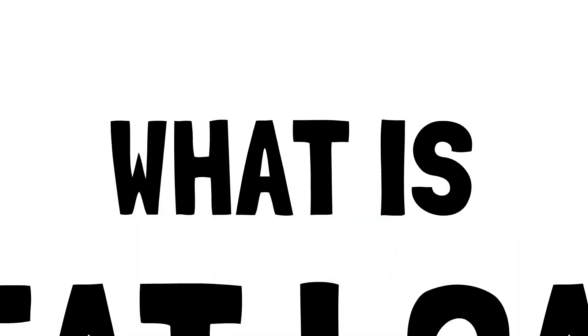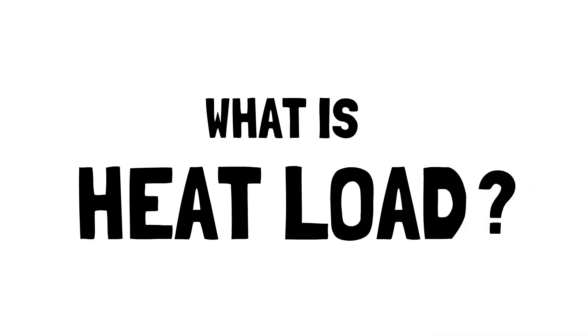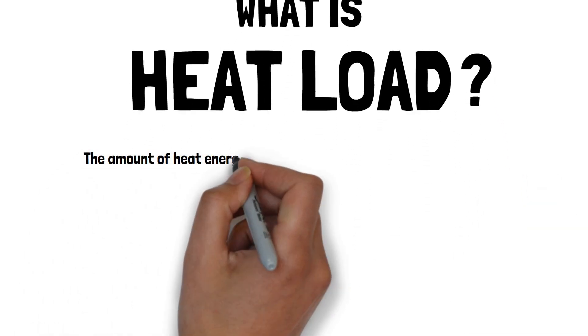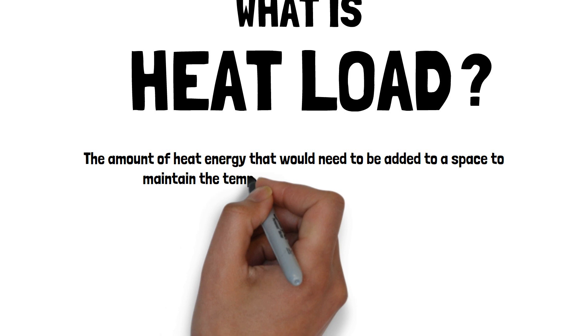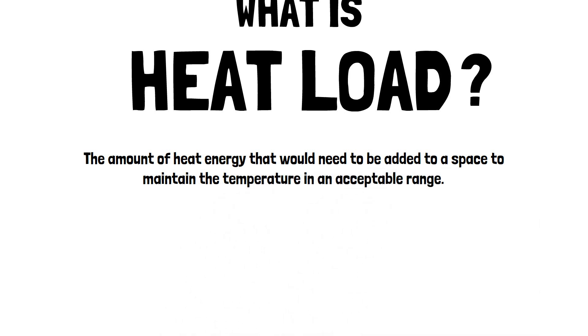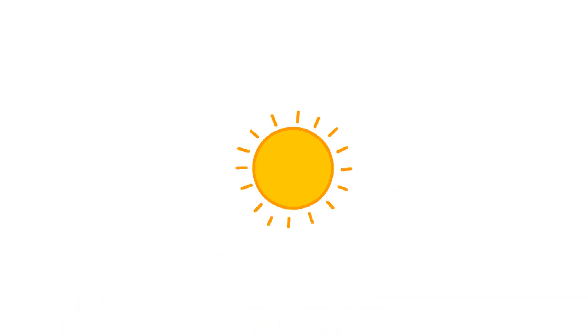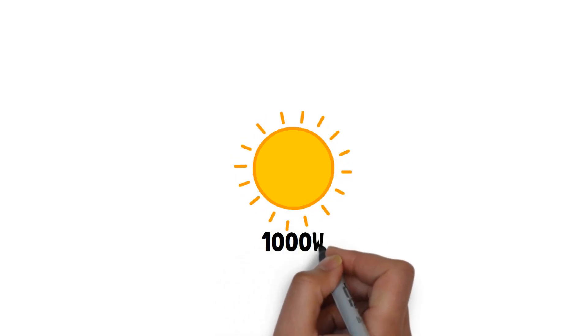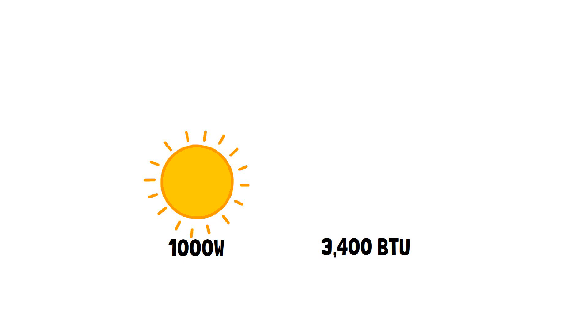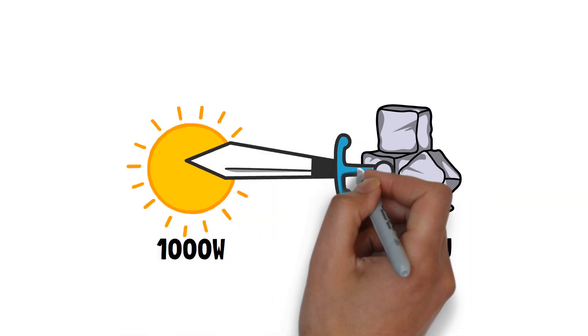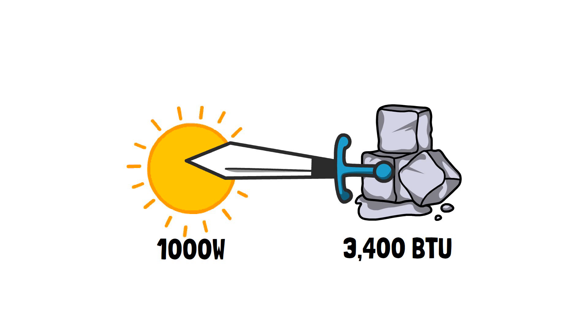The first thing to know is that BTU is calculated by heat load. What is heat load? The heat load is the amount of heat energy that is needed to be added to a certain space to maintain the desired temperature in an acceptable range. BTU counteracts a specific heat load. For example, an area with a heat load of 1,000 watts per hour would require 3,400 BTU per hour to counteract the heat. However, reality is not so simple.